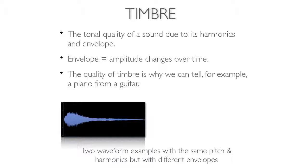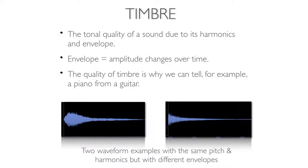Here's an example where I've manipulated the envelope — see if you can tell what this instrument is. It doesn't sound like it originally did because I changed the attack from sharp to very faded in. Here's what it sounded like originally — that's a lot easier to hear as a piano. This shows that the envelope — how amplitude changes over time — is an important factor in determining what instrument is playing.